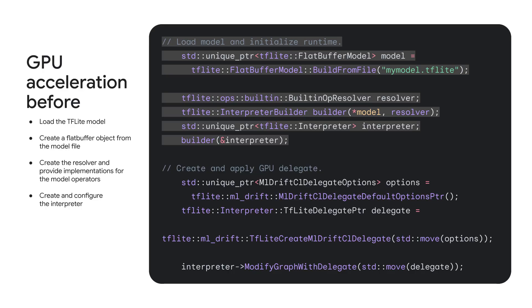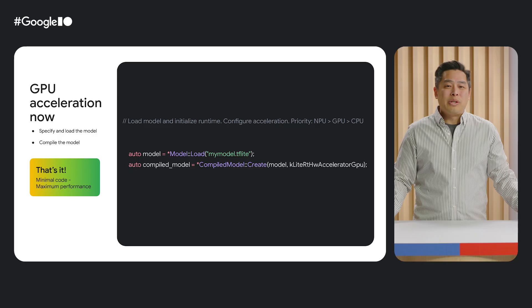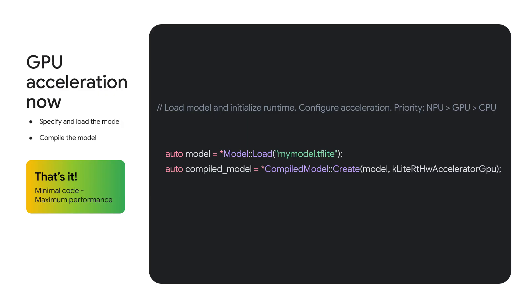In the past, there were many steps required to take advantage of GPU acceleration: load the model, create flat buffer objects, create the resolver and interpreter, create and initialize the GPU delegate, configure it, and analyze the model for supported ops. You needed to remember all of this and troubleshoot if any steps were missed. This was cumbersome and tedious, so we're simplifying this process. Now with LiteRT, we just require two steps: specify and load the model, compile the model, and specify the backend you'd like to target as an option. In this example, you can write up to 80% less code while getting maximum performance.